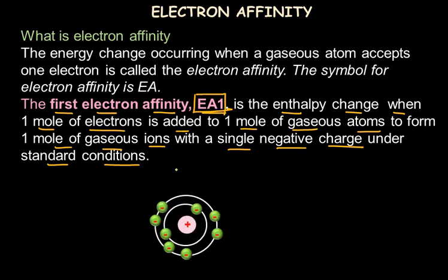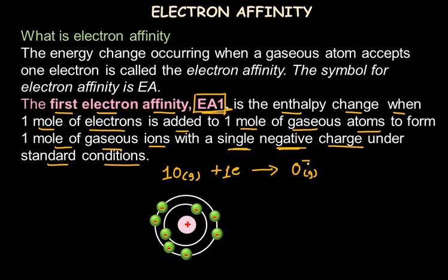Taking the example of oxygen: oxygen in its gaseous form gains one electron to form an oxygen ion with a minus-1 charge in the gaseous state under standard conditions. Since it is difficult to measure the energy change with one atom and one electron, we take one mole of oxygen atoms and add one mole of electrons to form one mole of gaseous ions with a single negative charge. The energy involved is the first electron affinity, measured in kilojoules per mole. For oxygen, Ea1 = −142 kJ/mol.